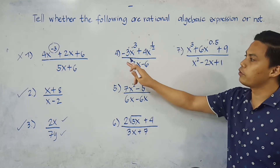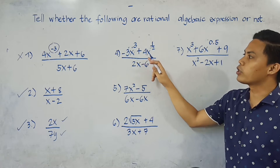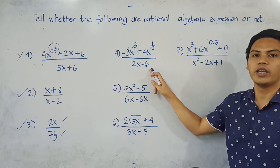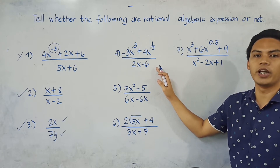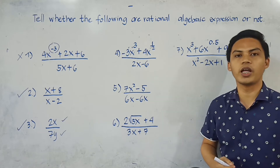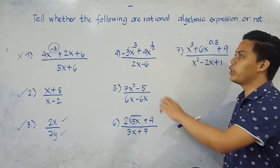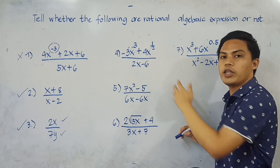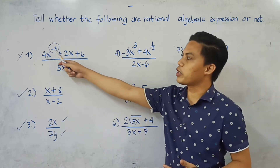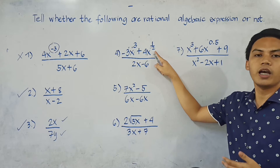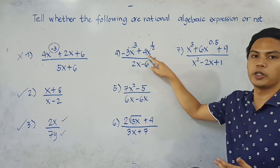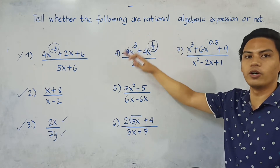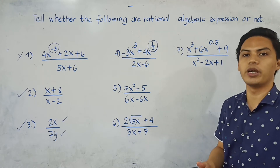Number 4: We have negative 3x cubed plus 4x raised to 1/2, all over 2x minus 6. This is NOT a rational algebraic expression because, looking at the numerator, there is a variable whose exponent is a fraction. A negative exponent is not allowed, and likewise a fraction exponent is not allowed. So the numerator is not a polynomial, and therefore this is not a rational algebraic expression.